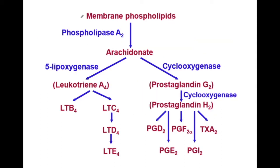As we saw in the previous video, whenever an inflammatory reaction occurs, it causes the release of phospholipase A2. This enzyme converts membrane phospholipids into arachidonic acid.